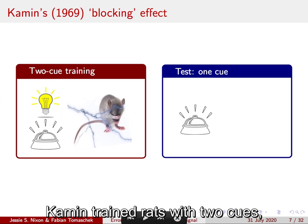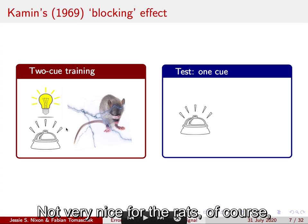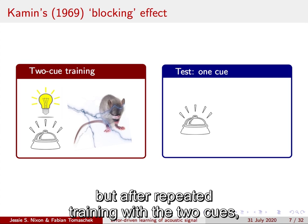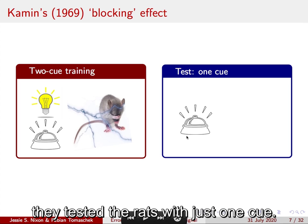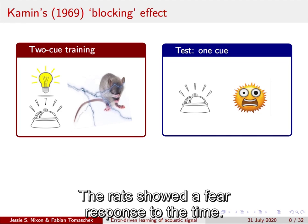Kamin trained rats with two cues, a light and a tone, followed by an electric shock. Not very nice for the rats, of course, but after repeated training with the two cues, they tested the rats with just one cue. For example, just the tone. The rats showed a fear response to the tone.